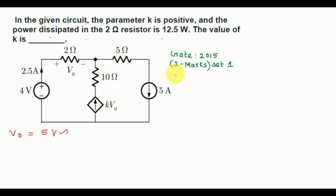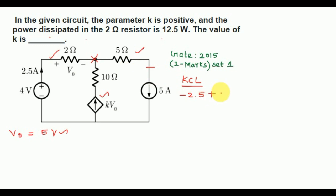Now apply Kirchhoff's current law for this node. This node involves 3 branches. The current entering towards the node in this branch is written as minus 2.5. For this branch, the current is going away from the node, so it is written as plus 5. For this branch, the current is entering towards the node, so we write minus k times V0 equal to 0.